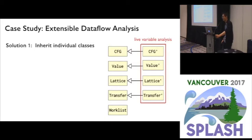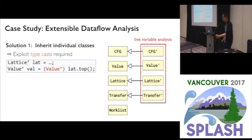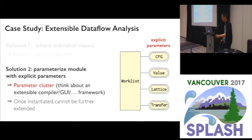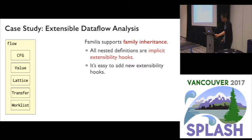We want to define a generic data flow framework that leaves the four parameters unspecified or partially specified, so that a specific analysis such as live variable analysis can be obtained by instantiating or specializing these parameters. One approach is to extend components individually using class inheritance, but this requires downcasts, which are error-prone because nothing prevents mixing things from different families. Another approach uses explicit parameters, but this causes a proliferation of parameters — think of an extensible compiler framework with dozens of interrelated types. This approach is not likely to scale.